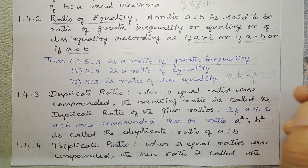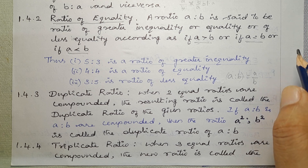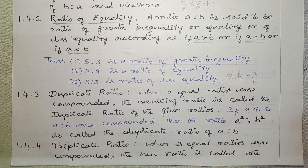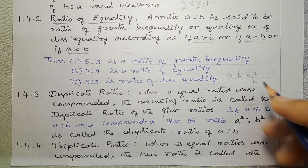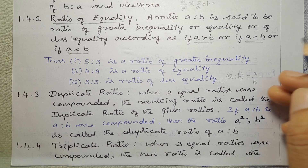Ratios are compounded by multiplying the fractions — multiplying the antecedents for the new antecedent and the consequents for the new consequent of a compounded ratio.